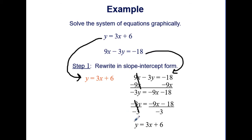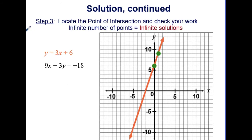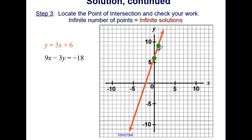We can already see that both equations are identical. We graph using a y-intercept of 6 and slope of 3 over 1, going up 3 and right 1 — and both equations produce the same line. When we try to locate the point of intersection, the two lines are overlapping and intersecting everywhere. There is an infinite number of solutions.